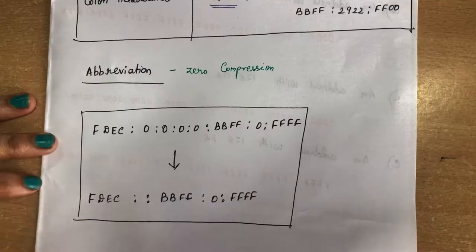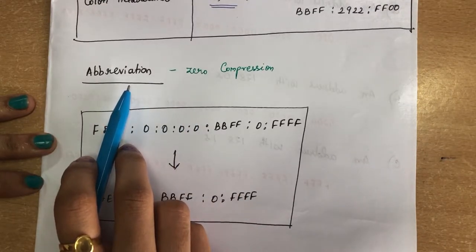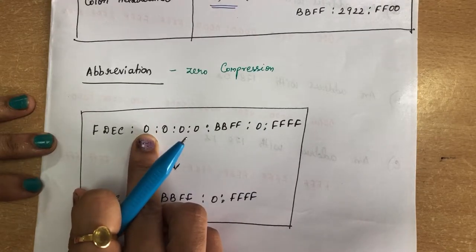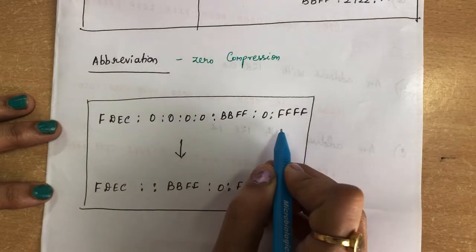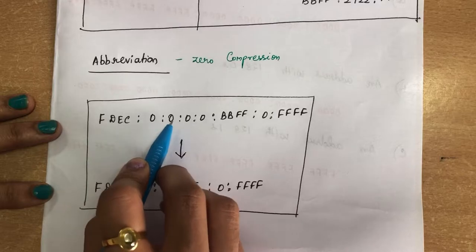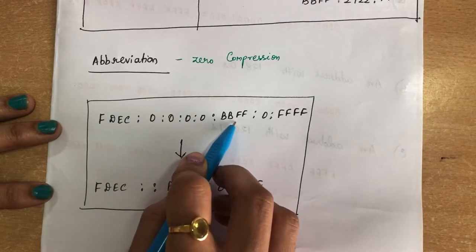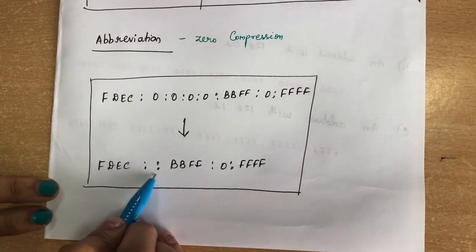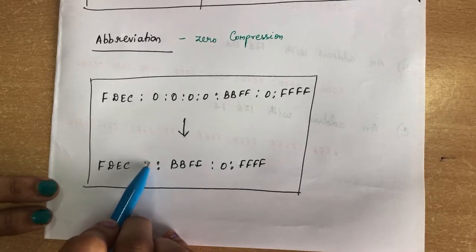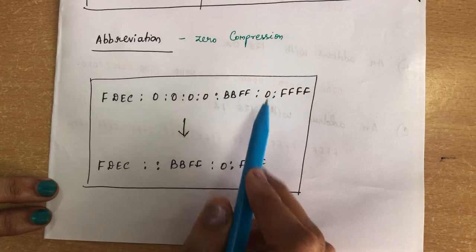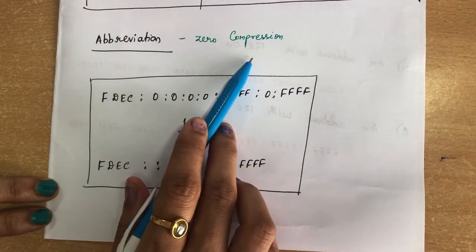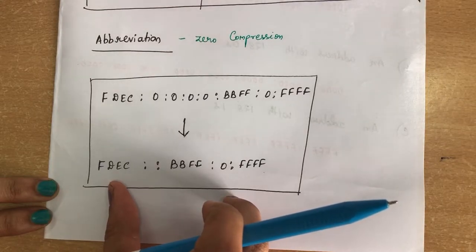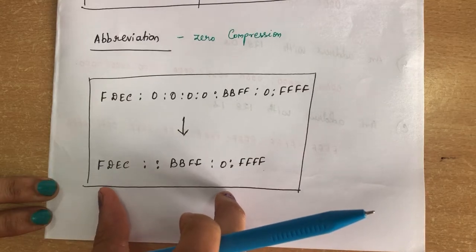When representing IPv6 in hexadecimal format, the address is very long. If you have groups of four zeros, you can abbreviate the address. For example, an address like FDEC:4000:0:0:0:BBFF:0:FFF can be shortened to FDEC::BBFF:0:FFF. All the consecutive zero groups are compressed into a double colon. This technique is called zero compression, which reduces the number of digits in your IP address.